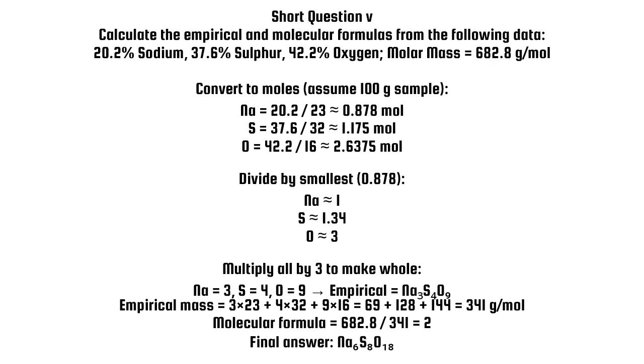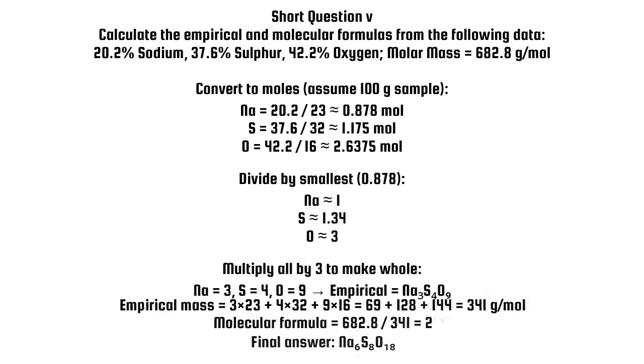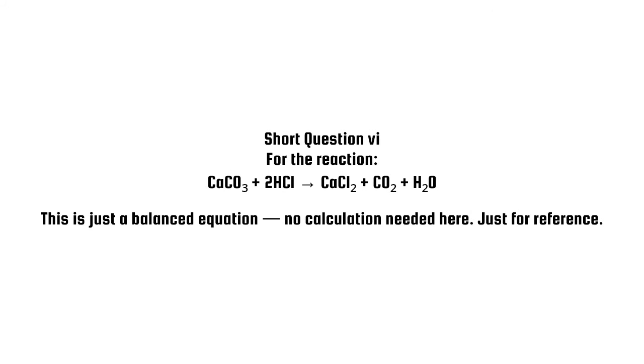Short question 5. Calculate the empirical and molecular formulas from the following data: 20.2% sodium, 37.6% sulfur, 42.2% oxygen. Molar mass equals 682.8 grams per mole. Convert to moles. Assume 100G sample. Divide by smallest, 0.878. Multiply all by 3 to make whole. Equation: No calculation needed here. Just for reference.